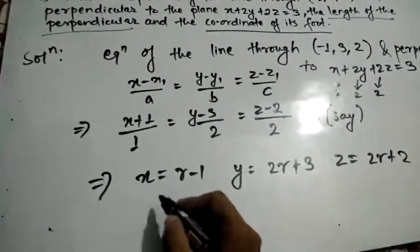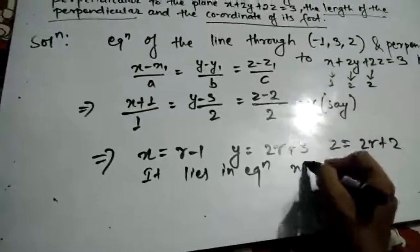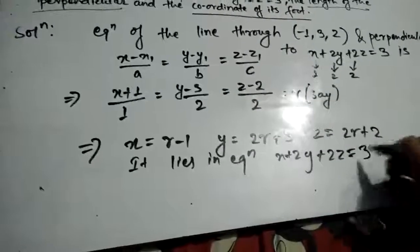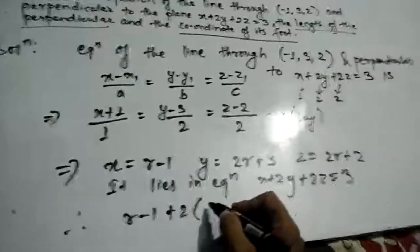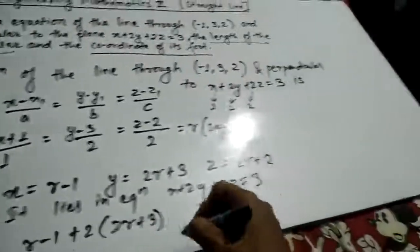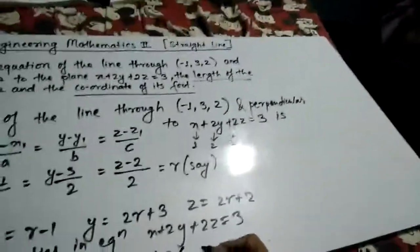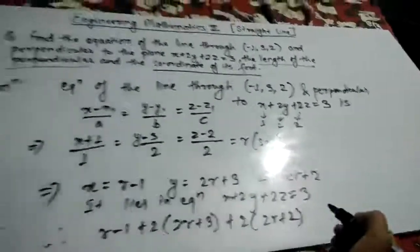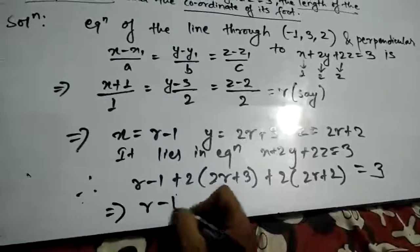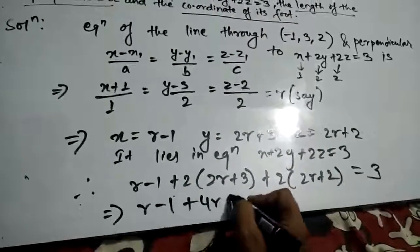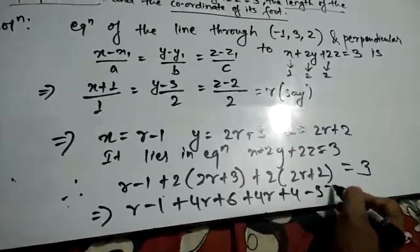Since the foot lies on the plane x + 2y + 2z = 3, substituting: (r - 1) + 2(2r + 3) + 2(2r + 2) = 3. Expanding: r - 1 + 4r + 6 + 4r + 4 = 3, which gives 9r + 9 = 3, so 9r = -6.